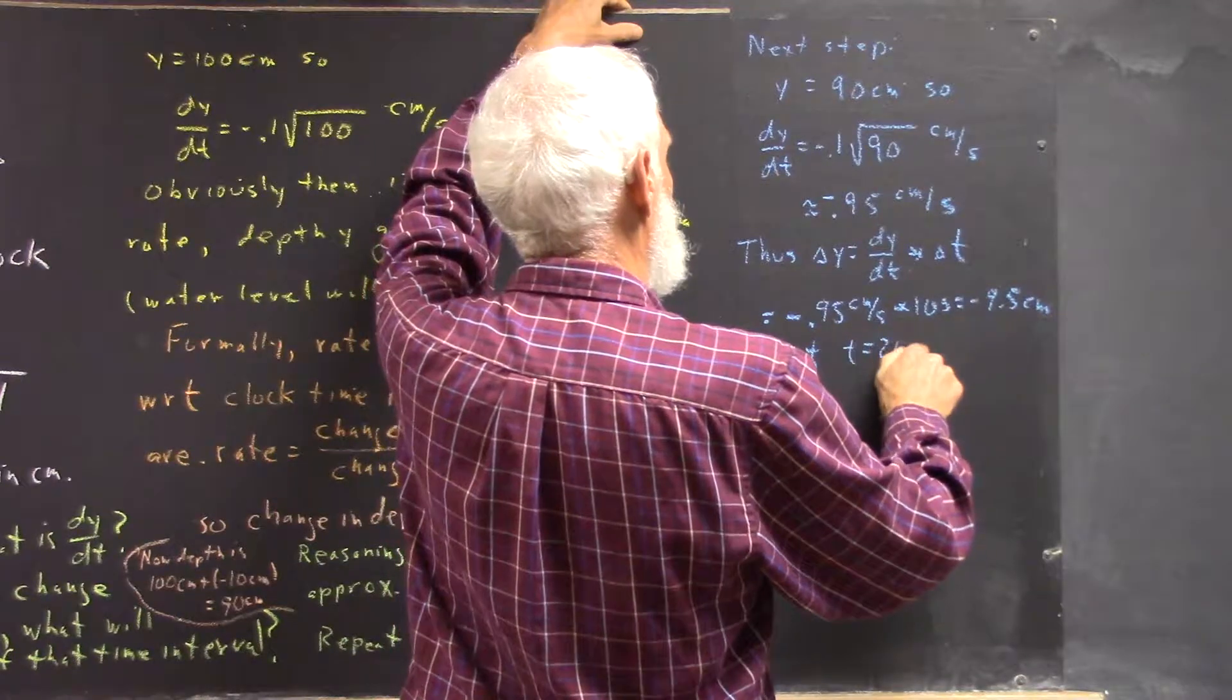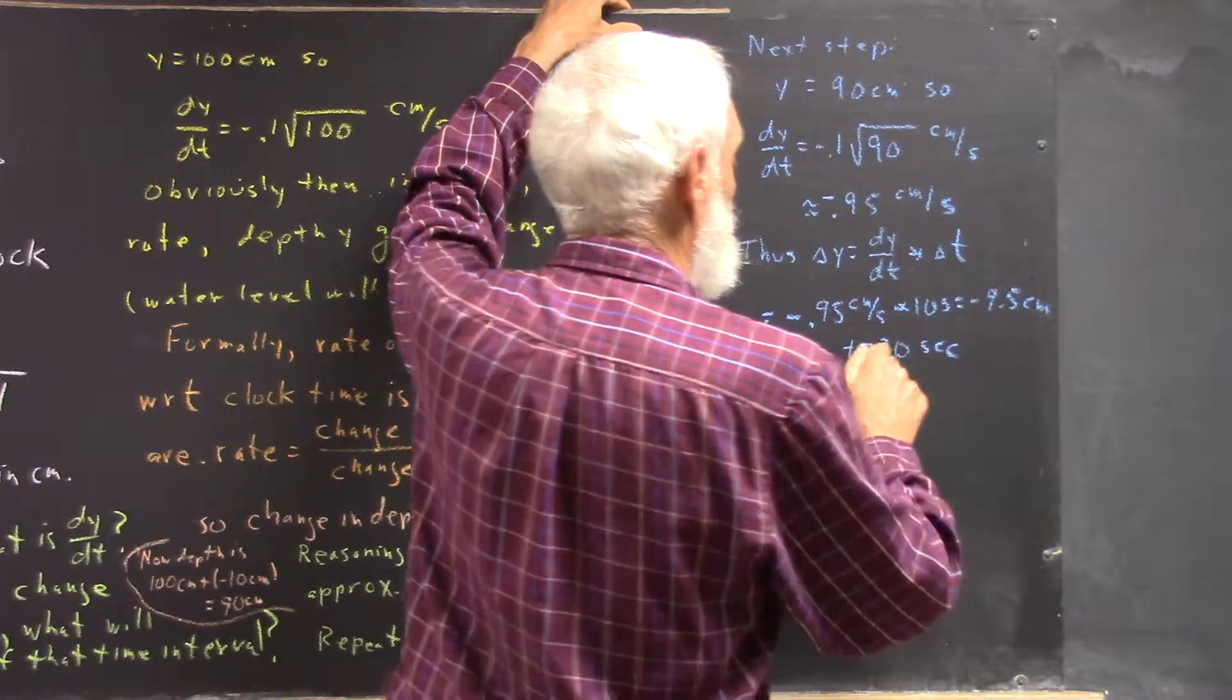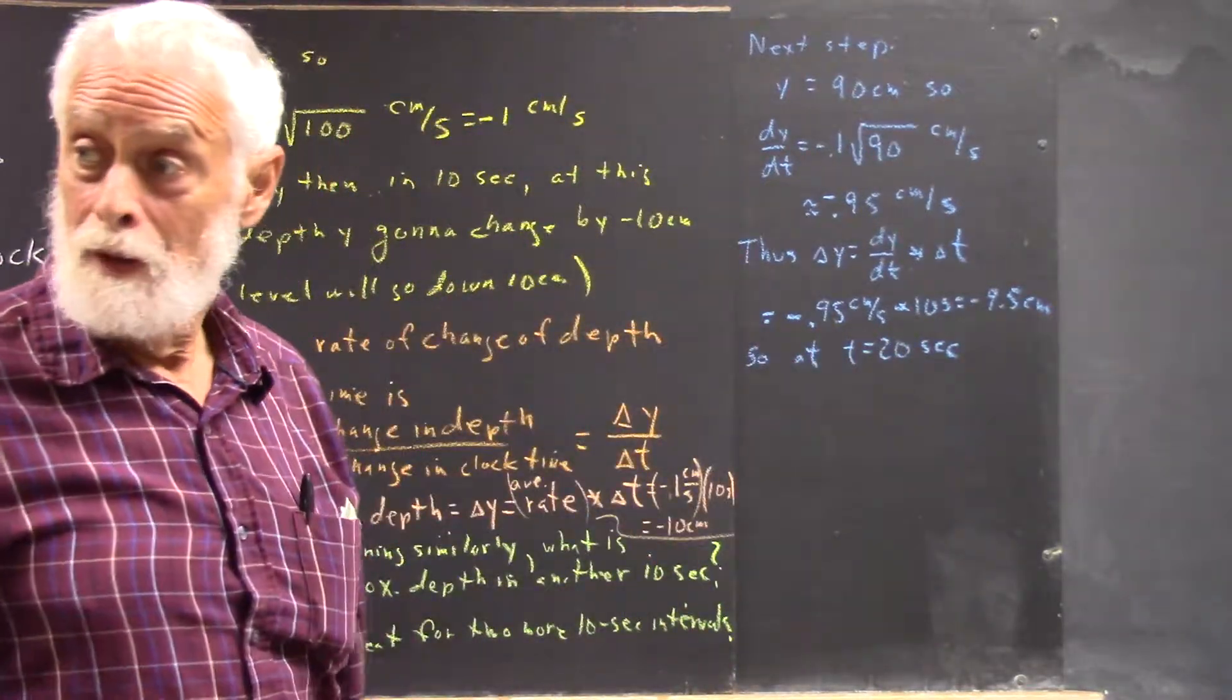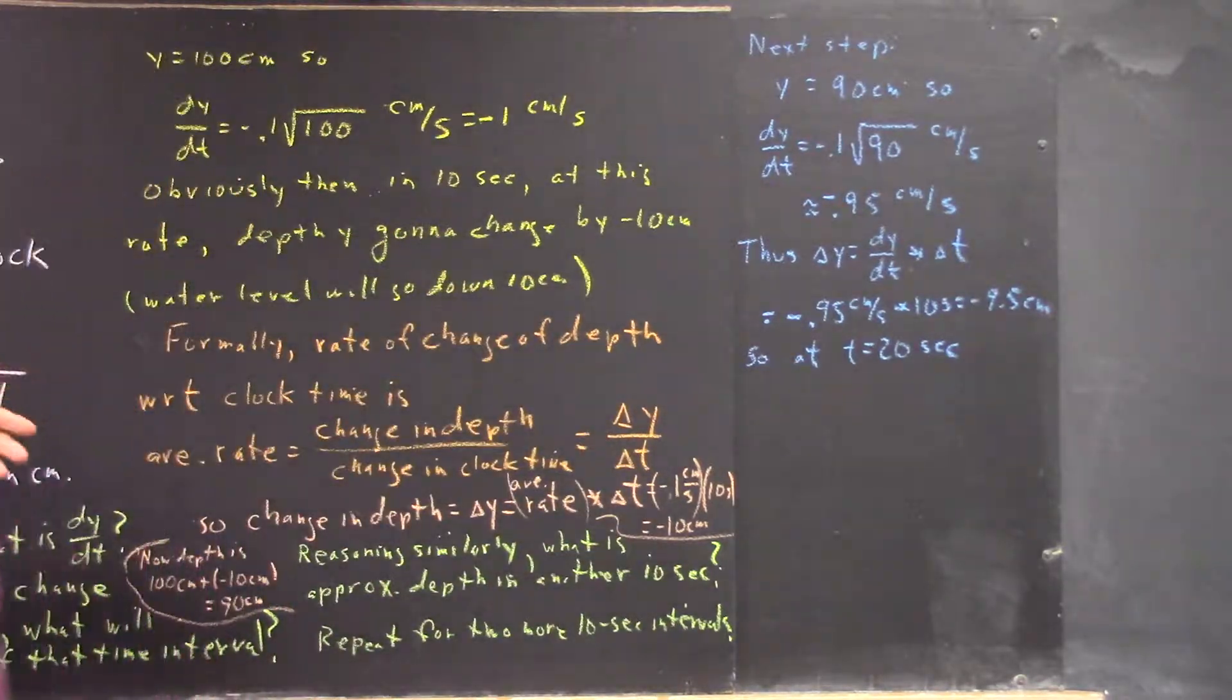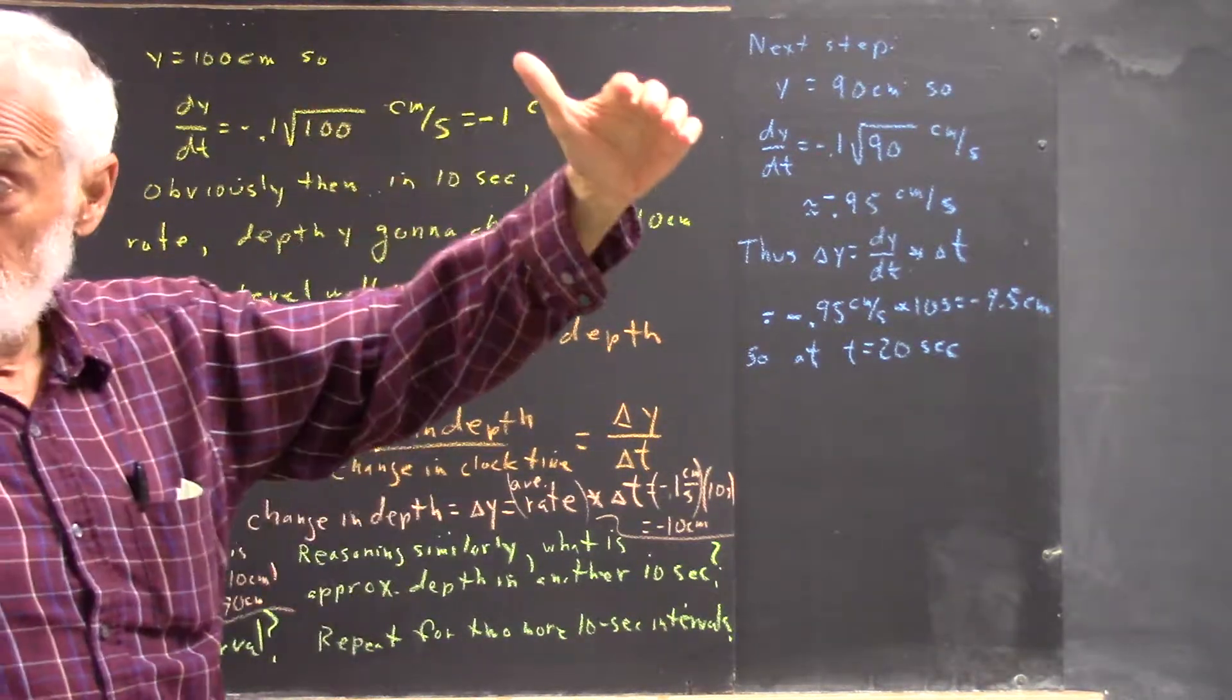So, at t equals 20 seconds, because t is clock time, right, we assume implicitly that the clock starts at 0 when you're at 100, right?